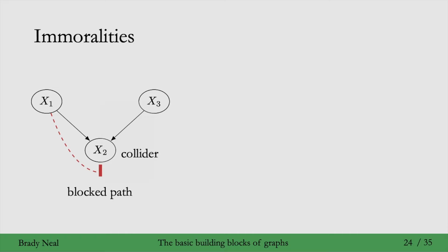So, colliders get their own special name because they block association here. It's different from what was happening in forks and chains where x2 in those graphs was just allowing association to flow through it.